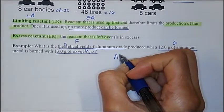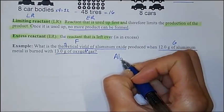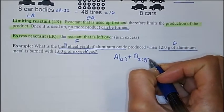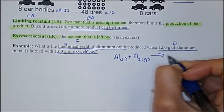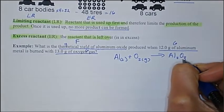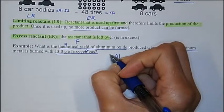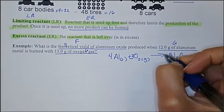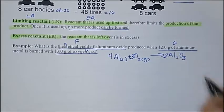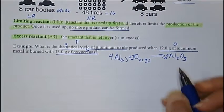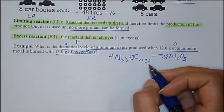So let's write our equation out. Our equation is aluminum, which is a solid, plus oxygen gas will produce aluminum oxide. Don't forget to balance this. So we have 4, 3, and then 2. So we are balanced here, and we're going to write our givens.